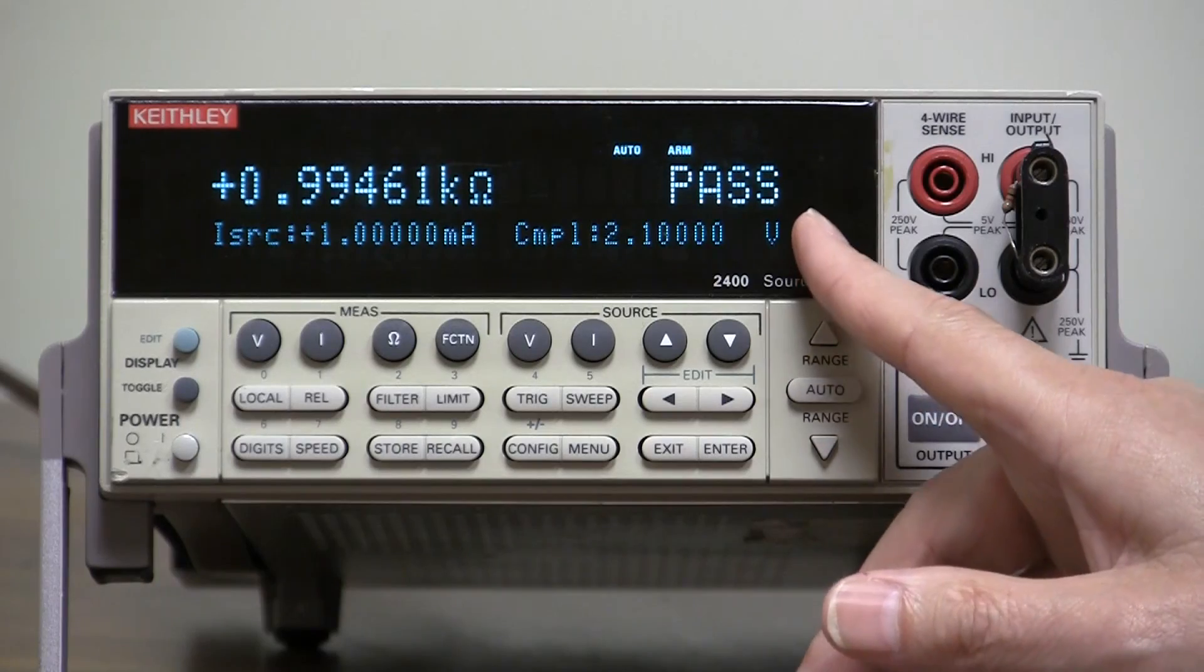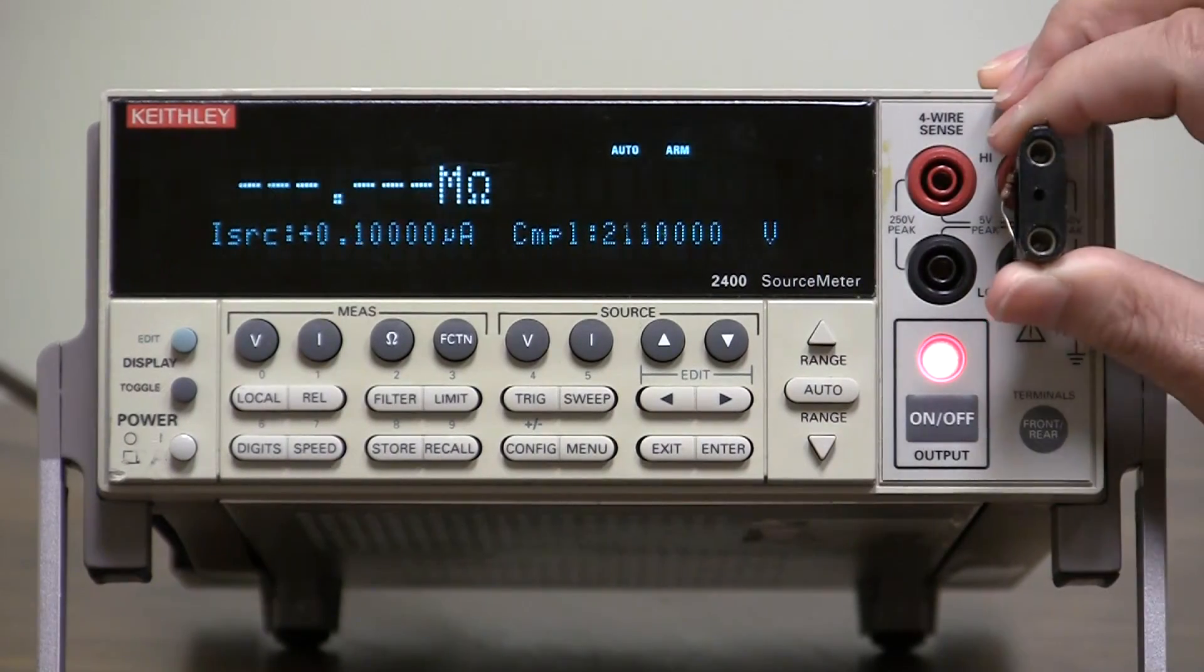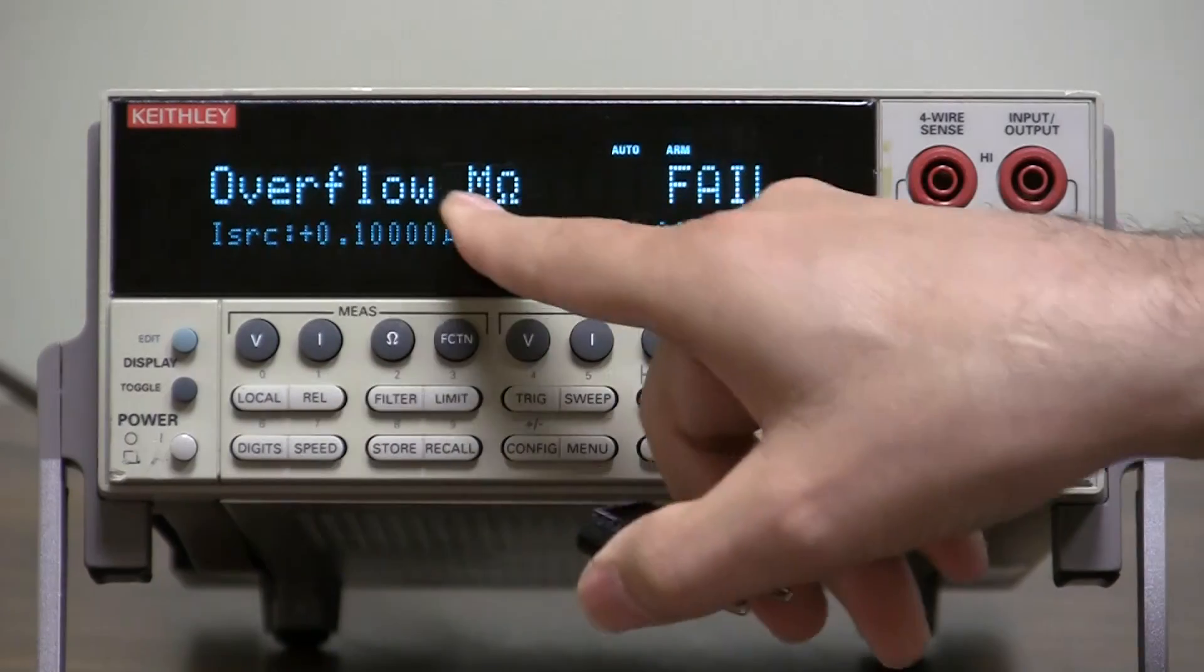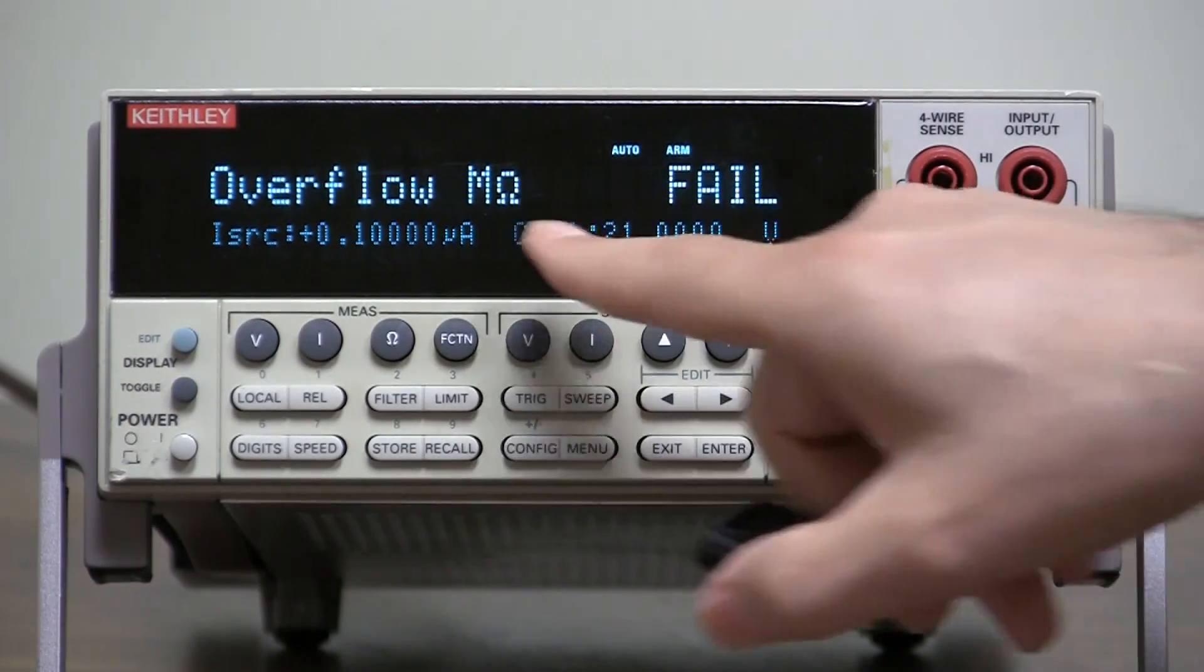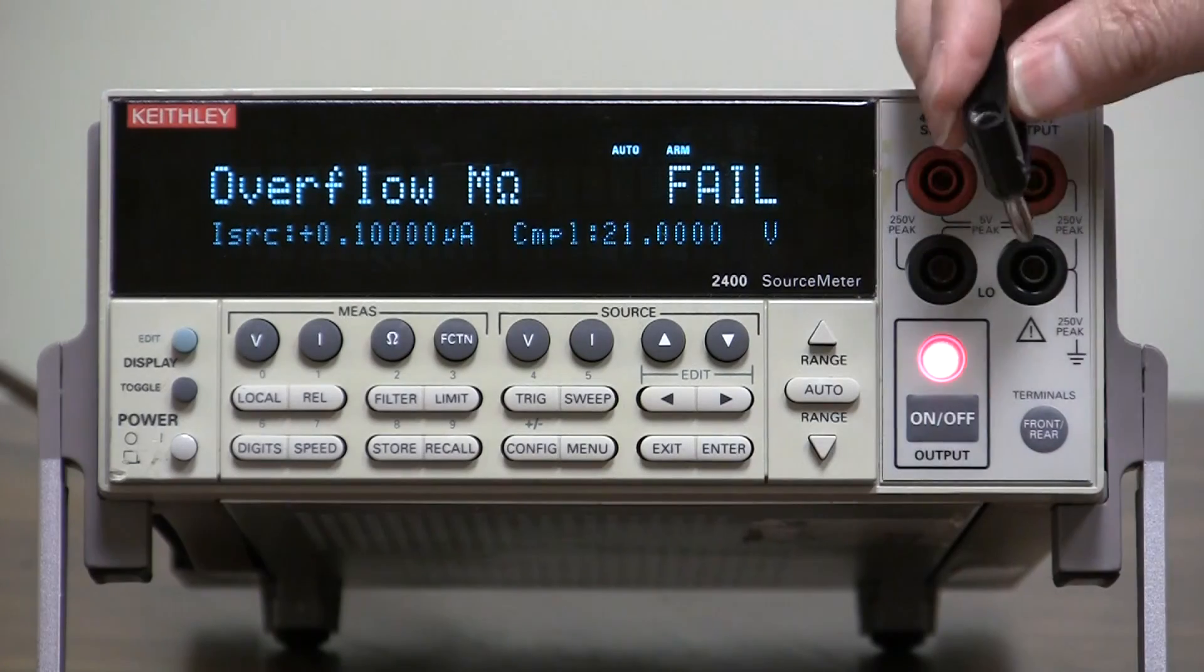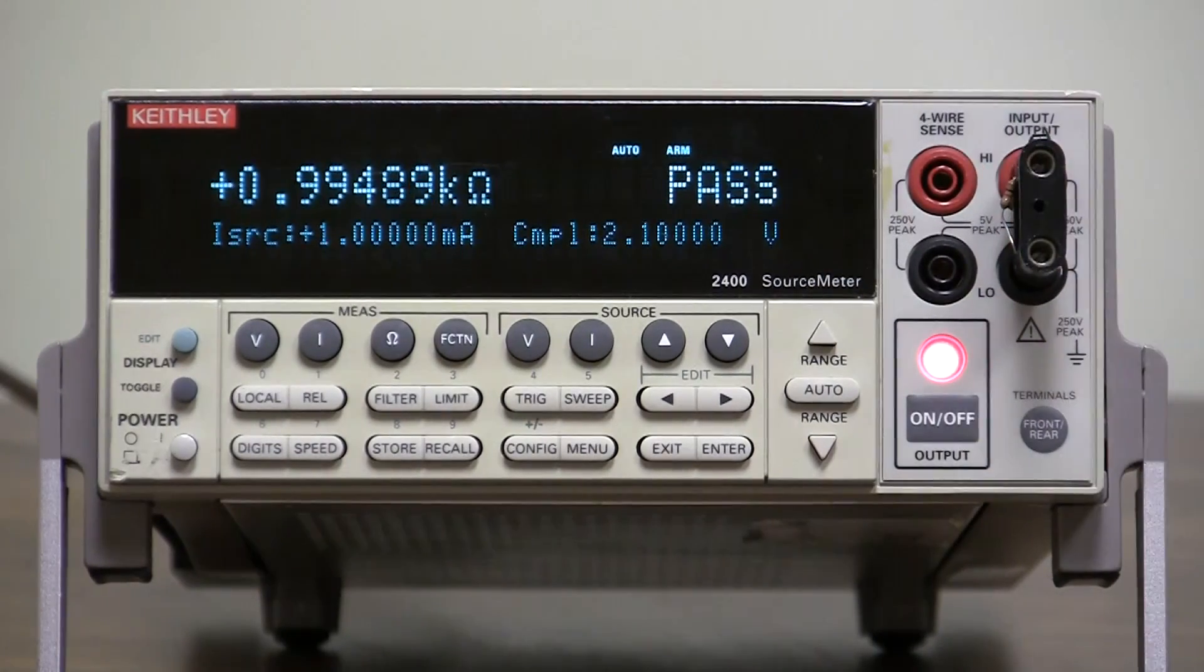How do you know that it's working? Well, let's just take this out. Overflow. That's higher than the 1K we set up. It says fail. Notice compliance goes also. So that's how you do the limits. It's very simple to set up.